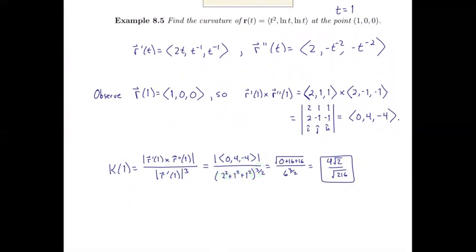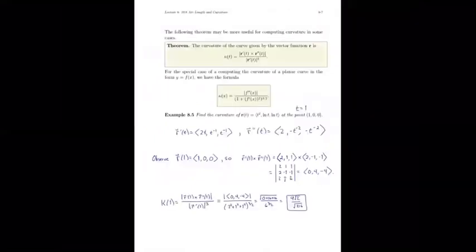Okay. So, that adds up to 6 to the 3 halves on the denominator. In the numerator, we have 0 squared plus 4 squared plus 4 squared. Simplifying this, arithmetically, we end up with this answer here. 4 root 2 over root 216. We could simplify some of these things if we'd like. That could be 4 over root 108. But it's not particularly important to do that. We have the value we need, and that's good enough.